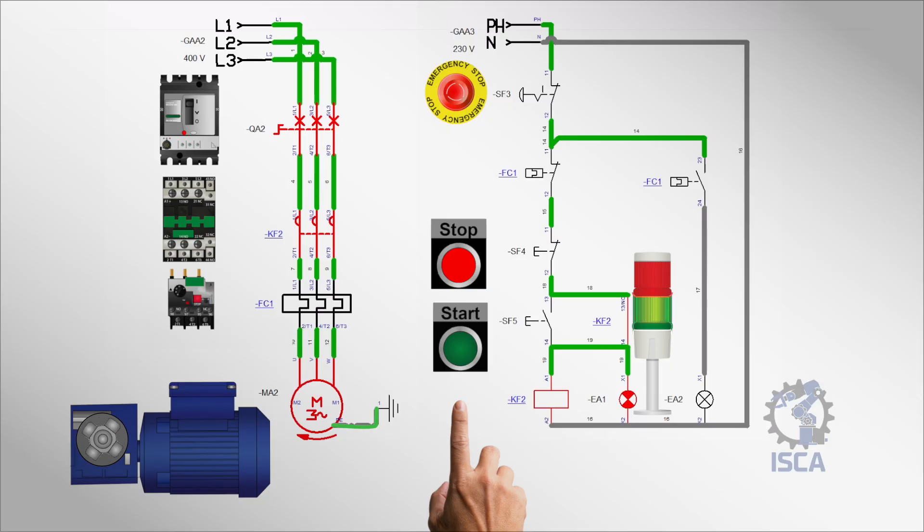The motor starts immediately at full voltage, hence direct online. The overload relay continuously monitors the motor current. If an overload occurs, the overload relay trips, opening the magnetic contactor and disconnecting the motor from the power supply.